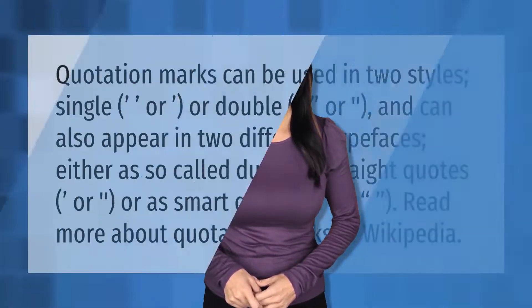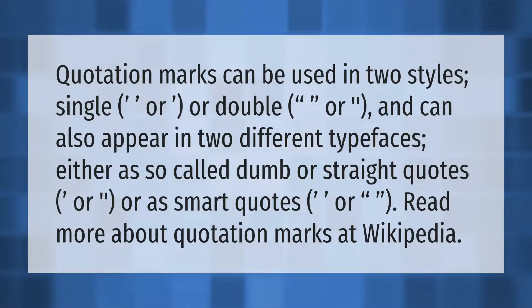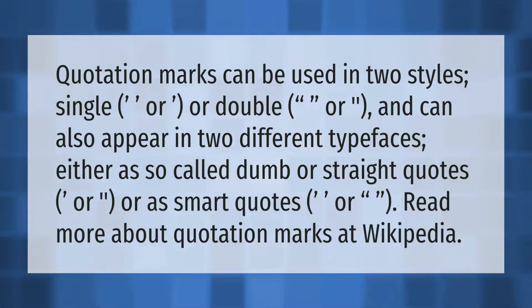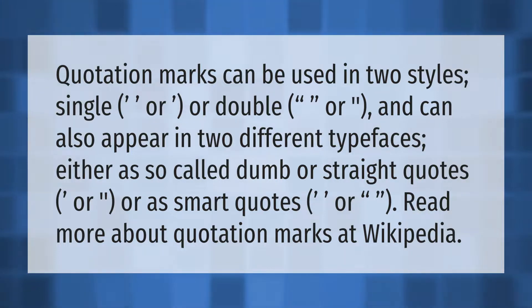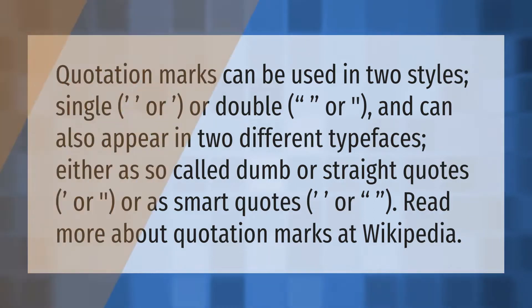Quotation marks can be used in two styles — single or double — and can also appear in two different typefaces, either as so-called dumb or straight quotes, or as smart quotes. Read more about quotation marks at Wikipedia.